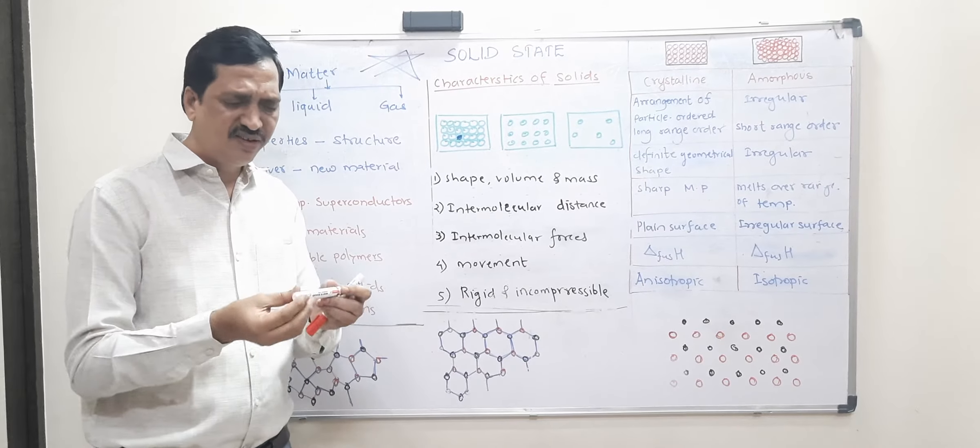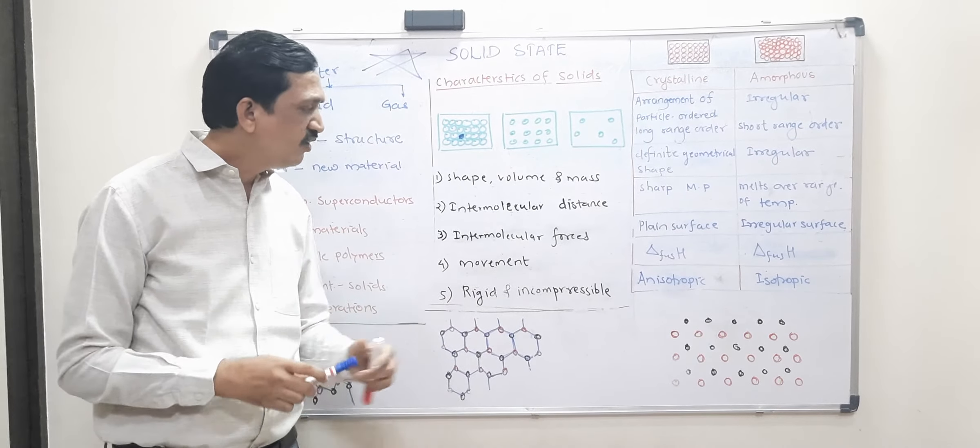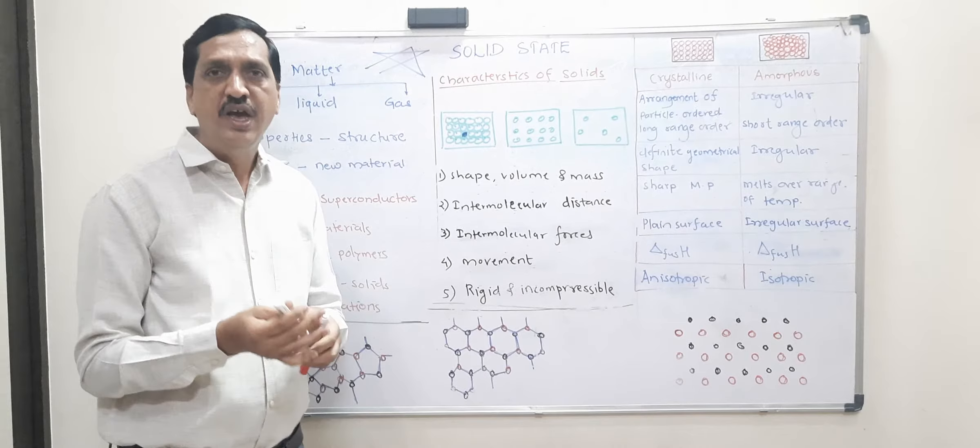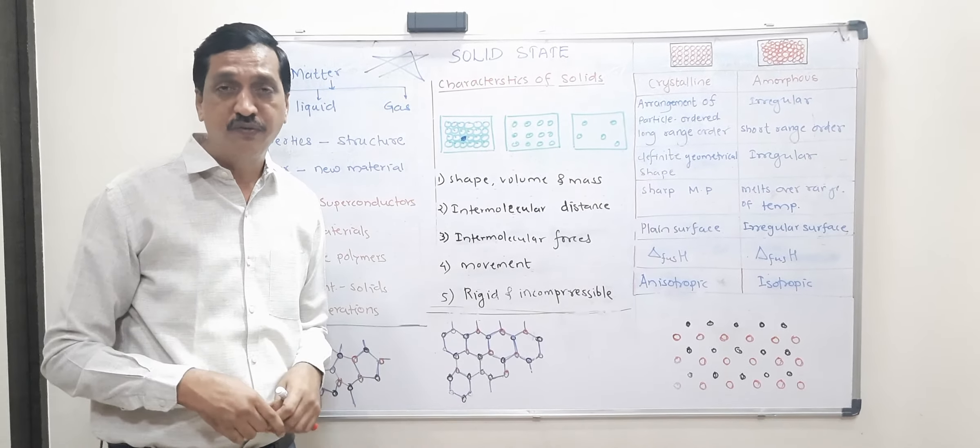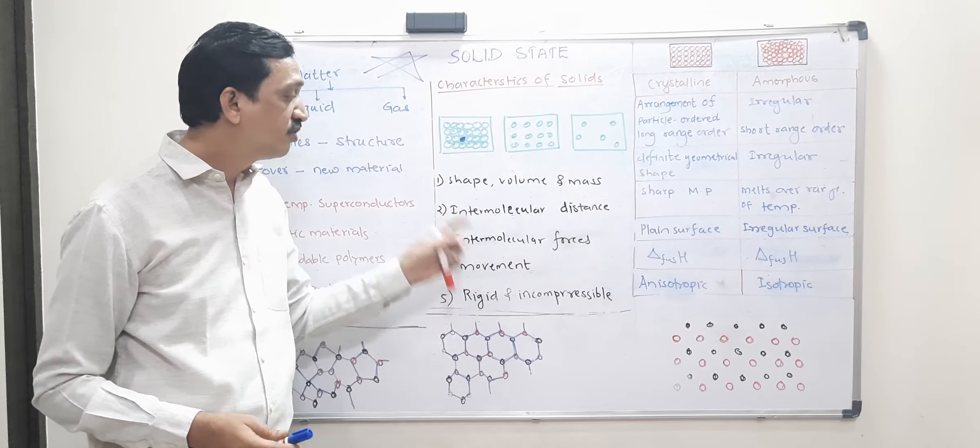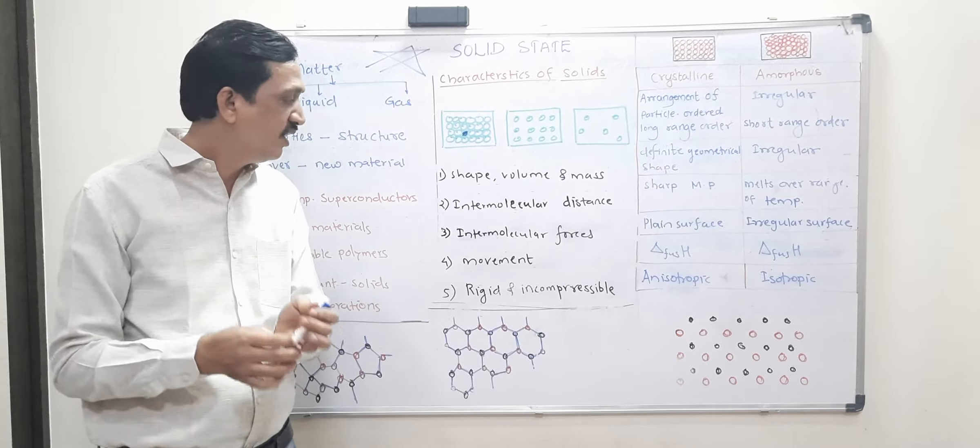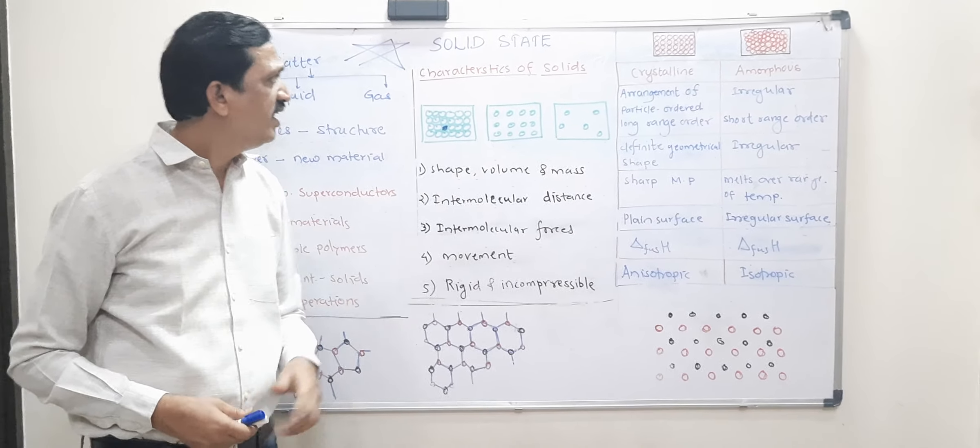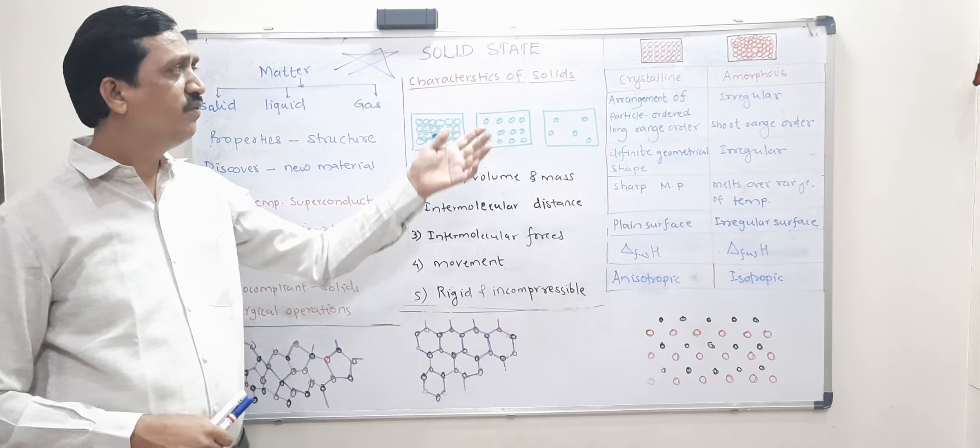And they are rigid. You can see, it's rigid. I cannot bend it. Rigid and incompressible. I can't compress it. Liquid to little extent can be compressive. Gas molecules, they show the property of compressibility and expansion. But solids, they cannot be compressed, they are rigid, they cannot bend it easily. So they show these properties. These are the characteristics of solids which we are studying in school with. Now we will go for next.